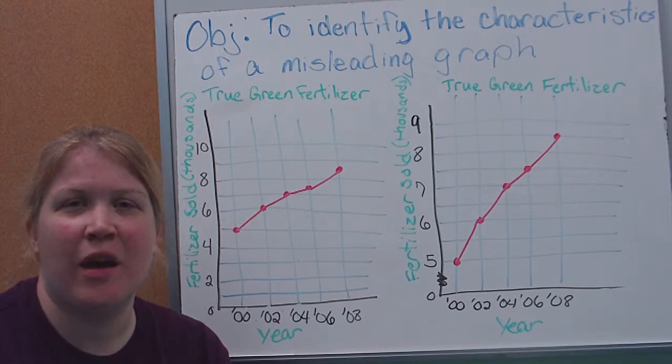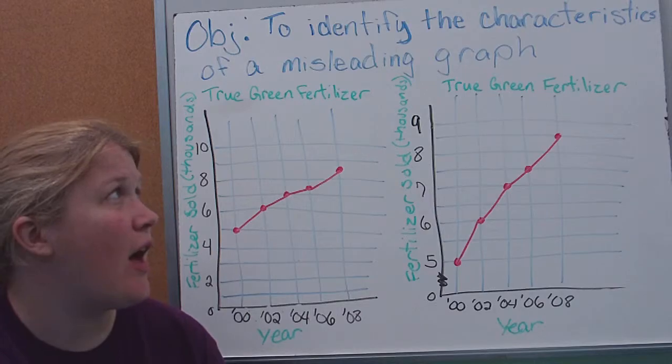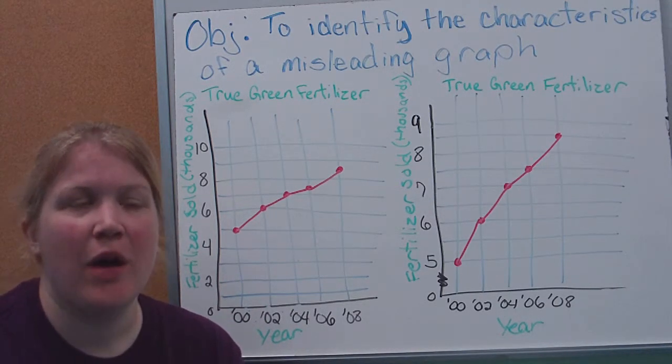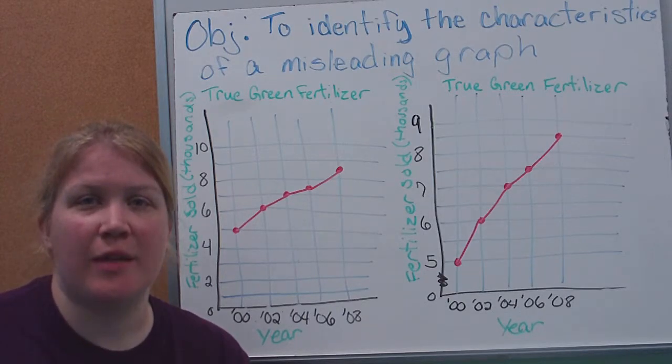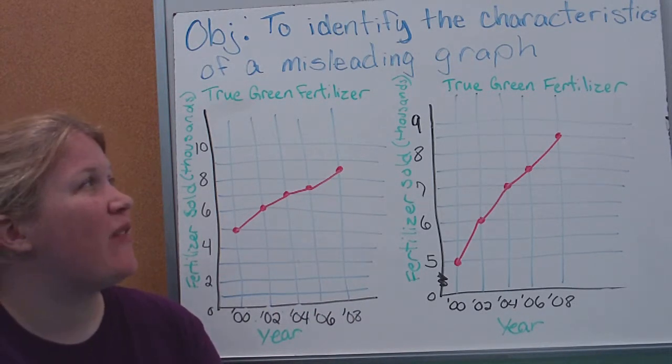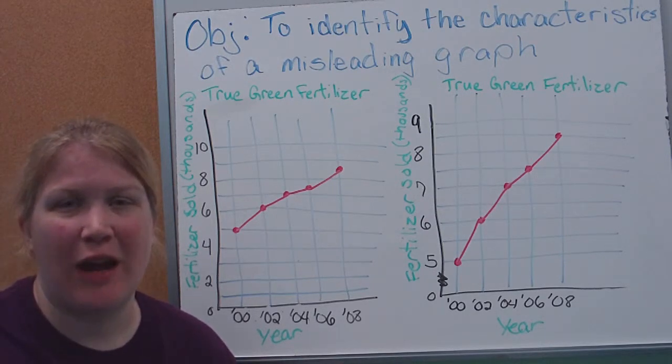Welcome back. This is going to be our last lesson on the data and statistics unit. I previously mentioned in another video misleading statistics or graphs. So that's what we're going to look at here. We want to be able to identify what are the characteristics that make a graph misleading.